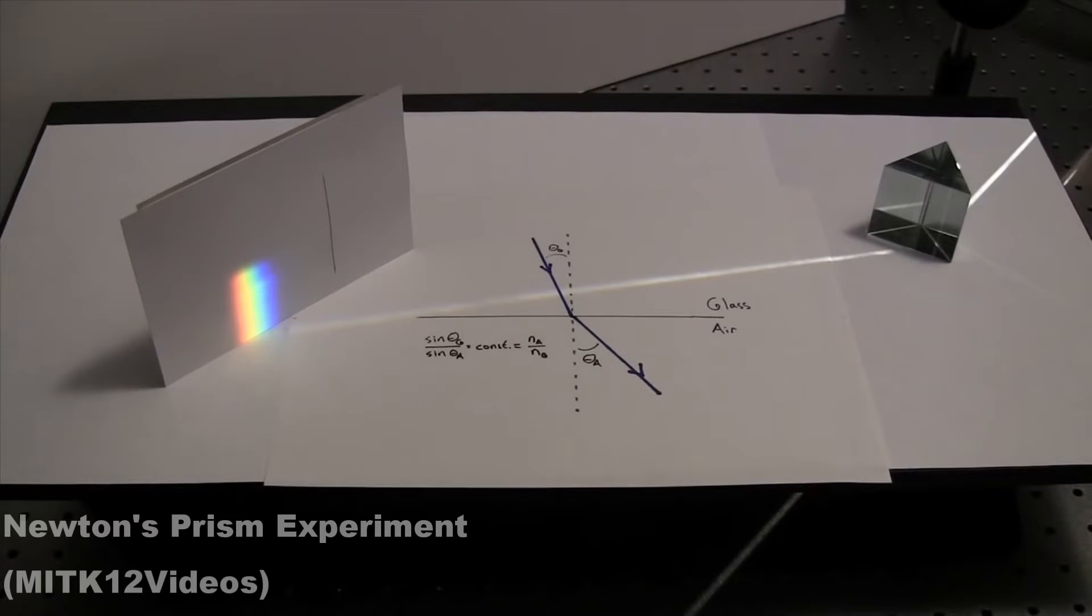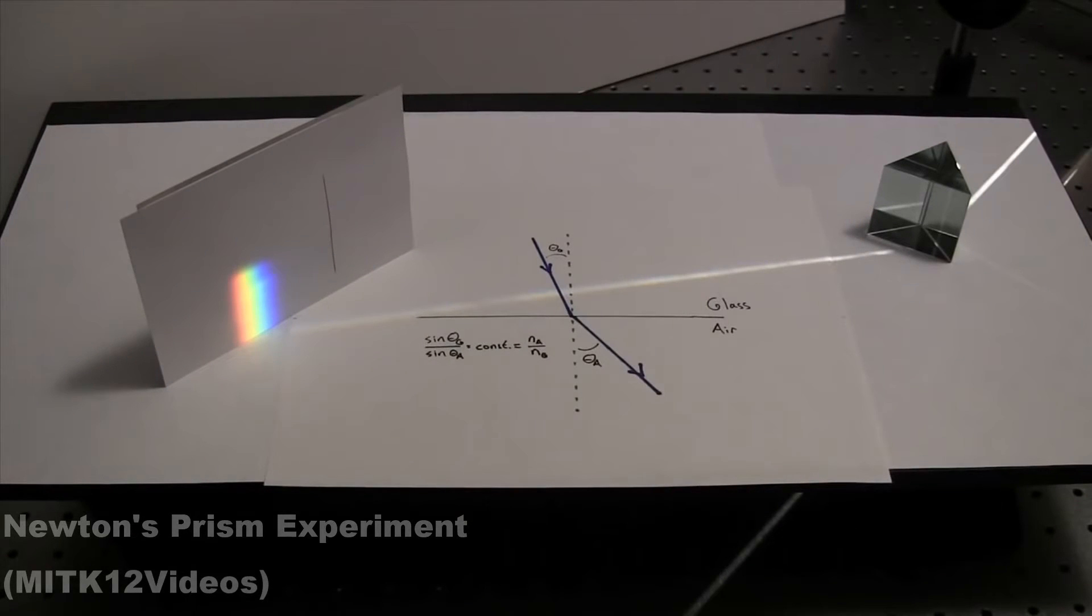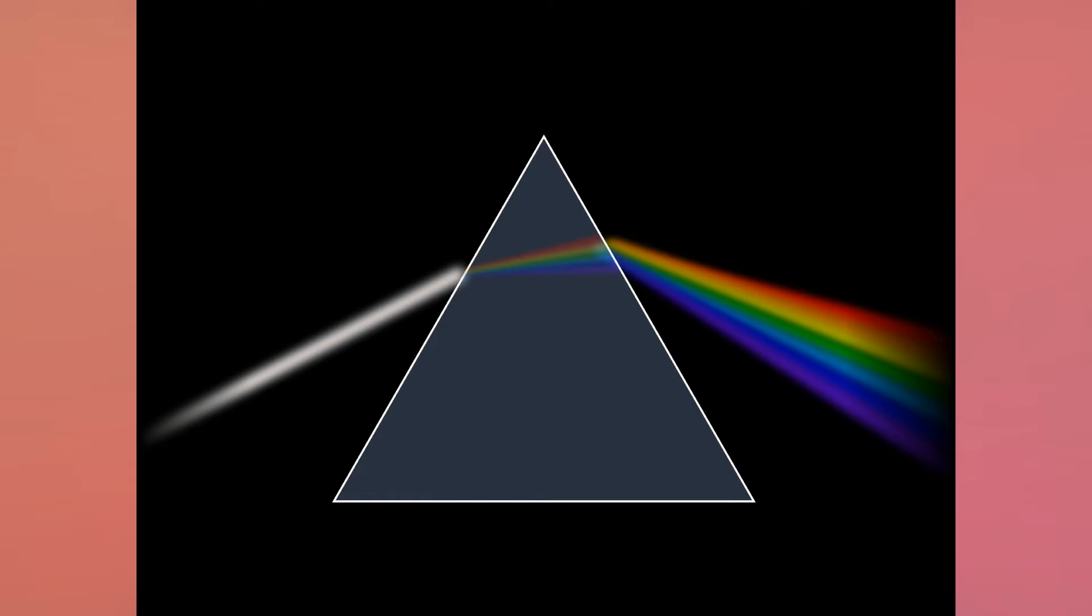We all know how a glass prism can make a rainbow by sending light in one side, but until Newton, it was believed that the prism added the color to the white light put in, almost like it was dyeing the light as it went through.